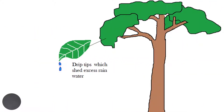Now let's look at the characteristics and adaptations of the rainforest trees. The leaves have drip tips with curved ends which help them shed excess rainwater. They are also leathery to protect them from the strong sunlight.